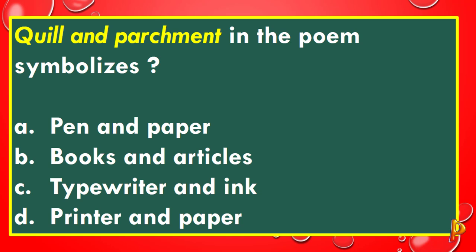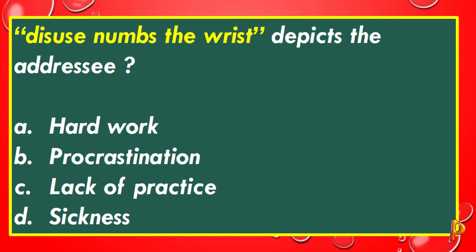'Disuse numbs the rest' in the poem addresses: A: Hard work. B: Procrastination. C: Lack of practice. D: Sickness. The correct answer to this question is C, lack of practice.